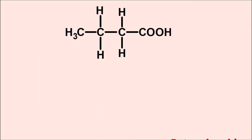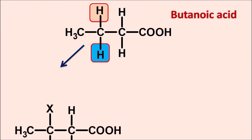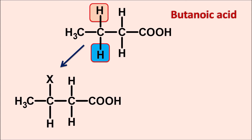Let us take another example — this is butanoic acid. At this carbon we can observe two hydrogens. Suppose if one of the hydrogens is going to be replaced by another group, then it gives a structure like this. Now because of the presence of a different group represented by the letter X, this carbon becomes chiral, therefore it is optically active and it results in the formation of enantiomers. So these hydrogens are again enantiotopic hydrogens.